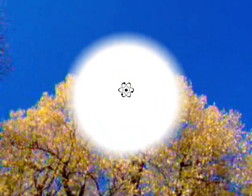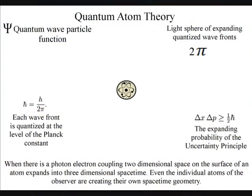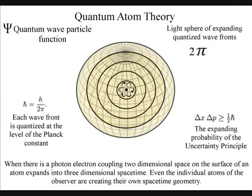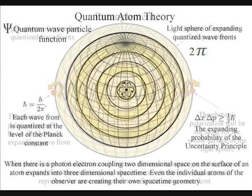Light will always take the simplest and most efficient path, expanding out in all directions, forming light spheres of electromagnetic radiation. The polarisation of the light will be the same for the entire surface of the light sphere.